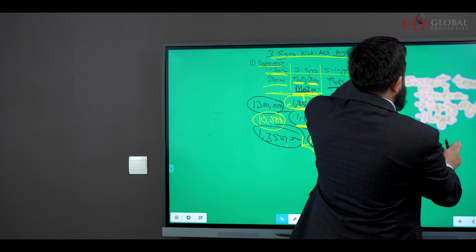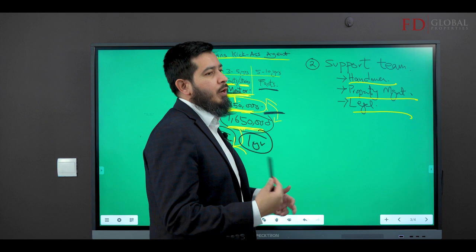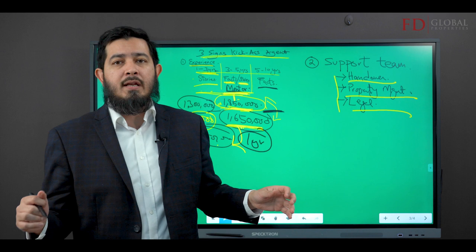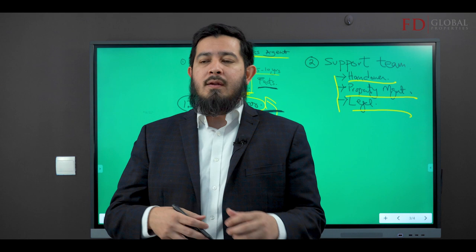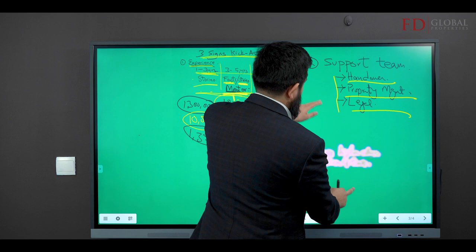Number two, a kick-ass agent should have a great support team. Now, back in the day, a support team, what does the support team do? Like the support team does the handover of the property. Property management has a legal lawyer to help the client with. Back in the day, I used to do all of this. And obviously, you're not going to be able to do justice to every single client that you're helping with handover of properties, property management, legal, and so on and so forth. Now, I run a full support team that the client, they're specialists in that area, and then they help the client with that.